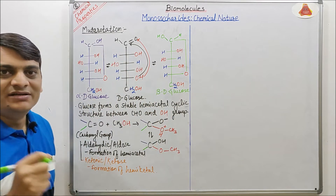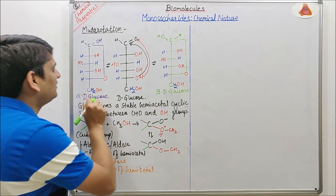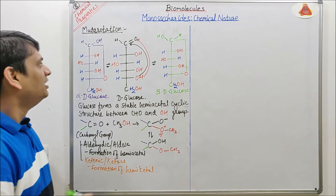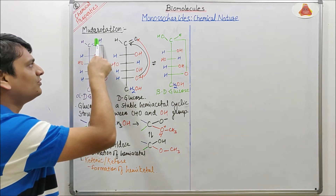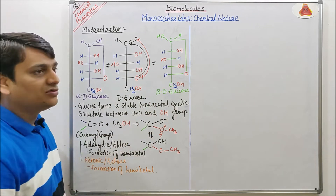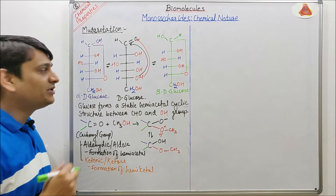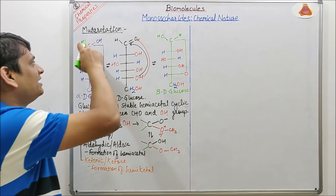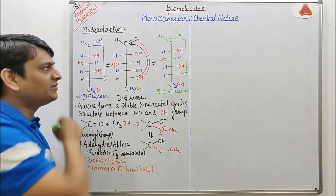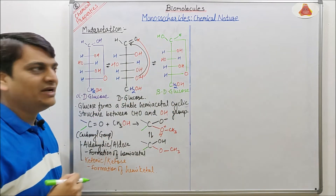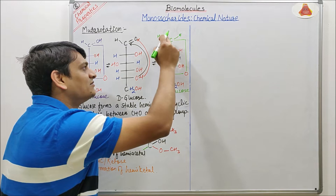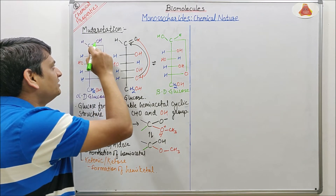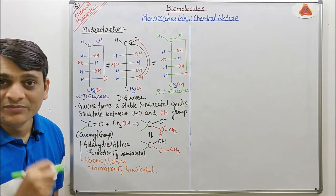This open-chain D-glucose forms two types of cyclic structures: alpha D-glucose and beta D-glucose. The difference is that in alpha D-glucose the OH group at carbon-1 is present on the right side, while in beta D-glucose the OH group is present on the left side. Because this carbon was previously not an asymmetrical carbon, it is now asymmetrical and is known as the anomeric carbon, or sometimes the hemiacetal carbon. It now contains four different groups.